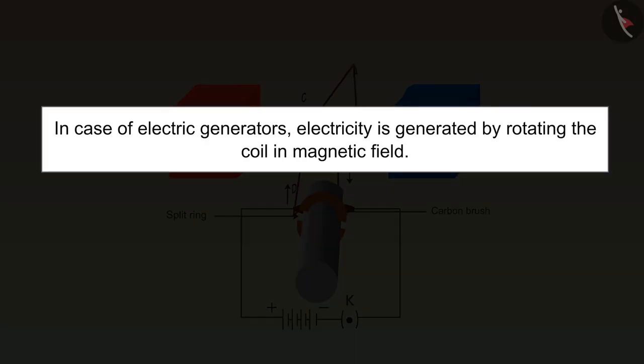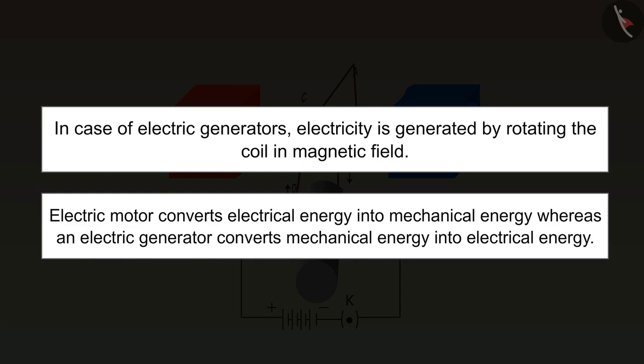Whereas in the case of electric generators, electricity is generated by rotating the coil in the magnetic field. Electric motor converts electrical energy into mechanical energy, whereas an electric generator converts mechanical energy into electrical energy.